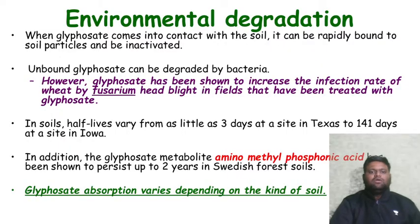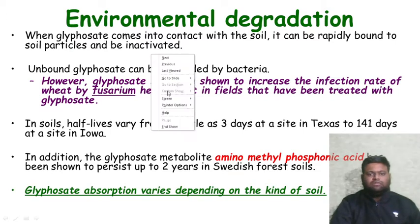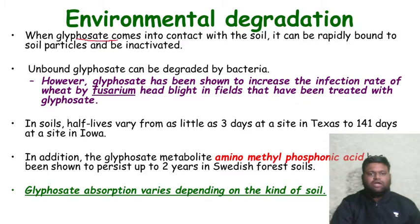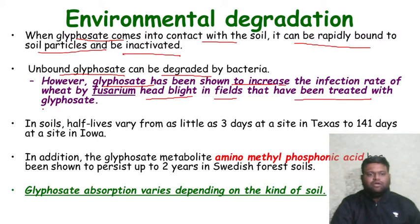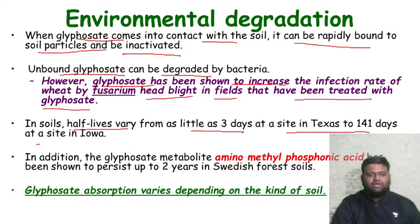We were discussing the action of glyphosate. When glyphosate comes into contact with soil, it can rapidly bind to soil particles and be inactivated. Unbound glyphosate can be degraded by bacteria. However, glyphosate has been shown to increase the infection rate of weeds by Fusarium head blight in fields treated with glyphosate. In soils, half-lives vary from as little as 3 days at a site in Texas to 141 days at a site in Iowa.